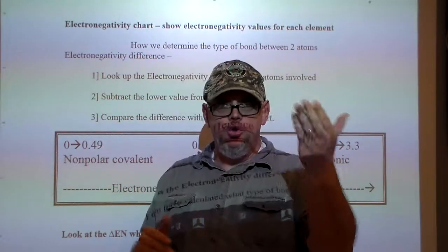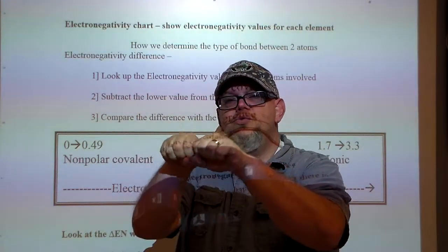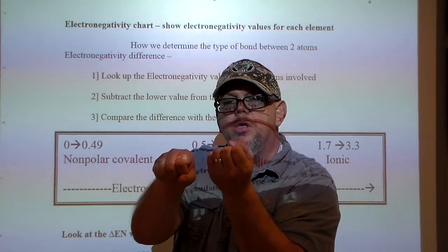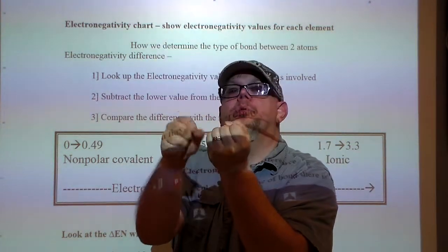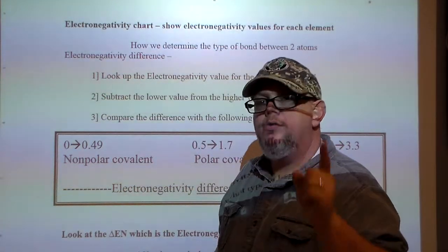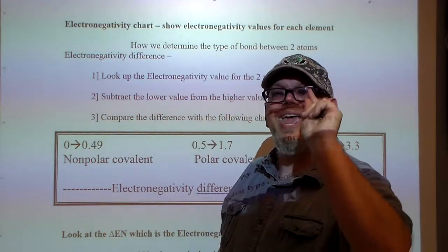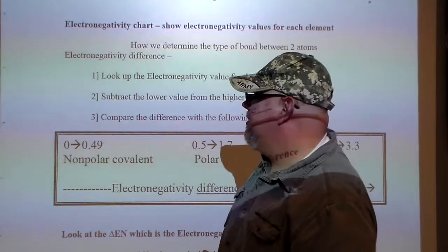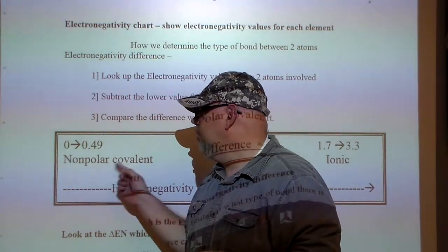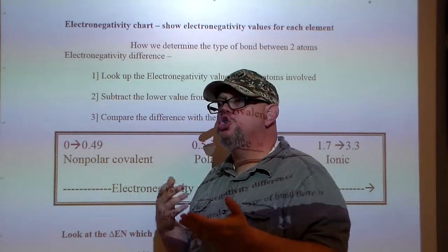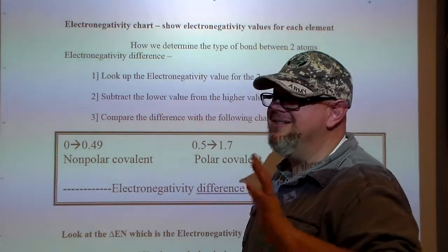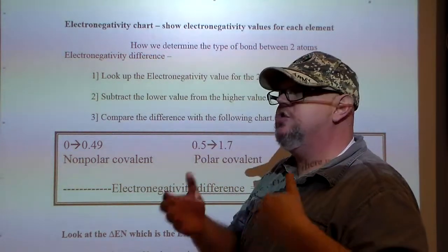Think of a magnet: it has a North Pole and a South Pole. Put two Norths together and they repel. Take a North and a South — opposites attract. So what does that have to do with covalent bonding? Are the electrons between the two atoms shared equally? When we say nonpolar covalent, the electrons between the two atoms are shared pretty equally. Polar covalent means there's an unequal sharing of electrons — it's still a covalent bond because electrons are shared, but it's not equal.